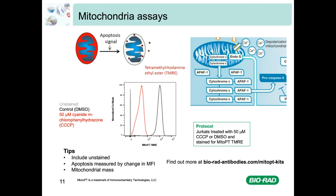Some TMRE-specific tips: data is usually measured by changes in MFI between samples, so include an unstained sample as a reference for background fluorescence. Mitochondrial mass can also influence the MFI — the larger the mitochondria, the more TMRE will be present. Therefore, it is a good idea to also check mitochondrial mass and account for any changes during analysis.